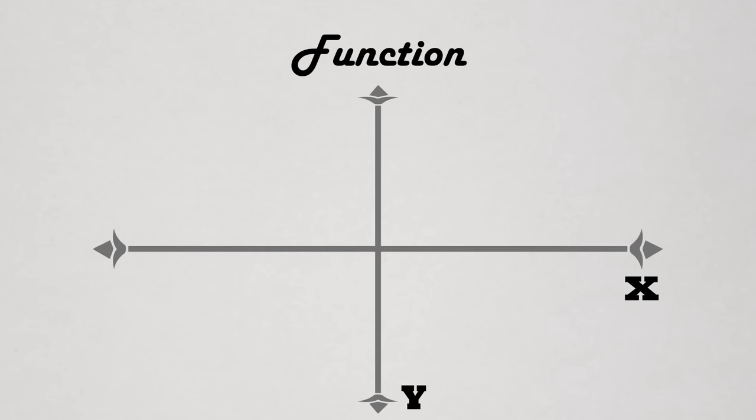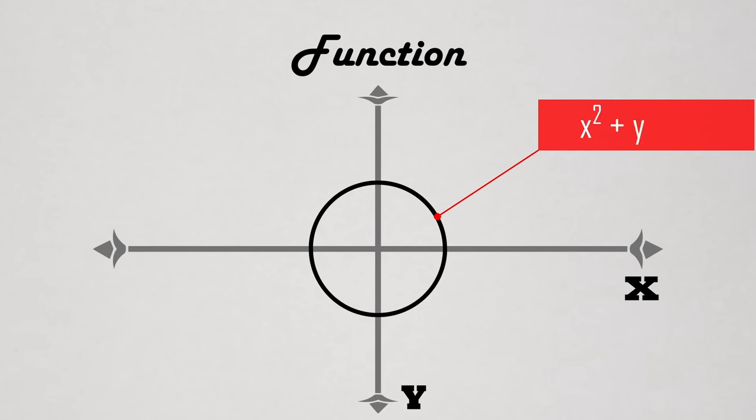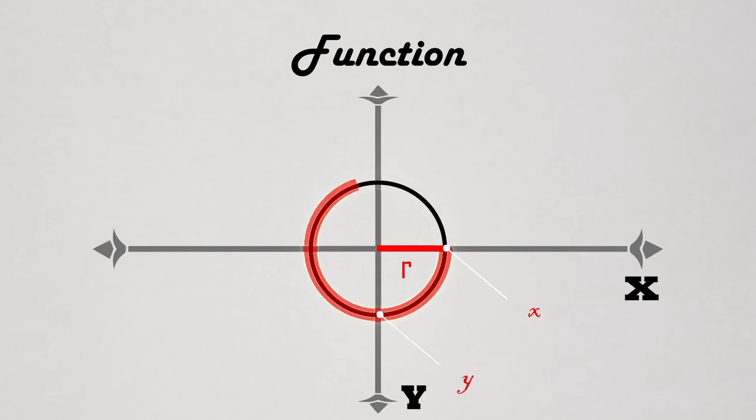For instance, consider the curve that we're most familiar with, the good old circle. A circle is defined by the equation x squared plus y squared equals r squared. This means that for a constant radius r, specific values of x and y trace out a splendid arc that will eventually meet its own end.